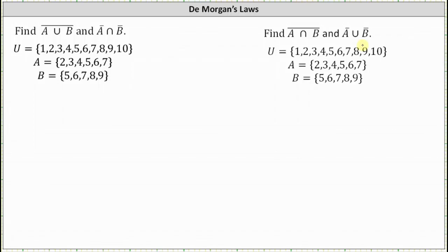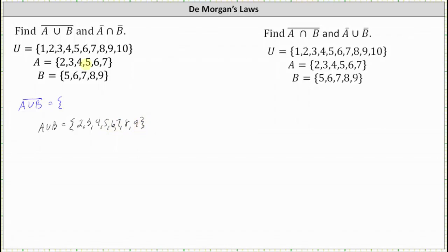Let's begin by determining the complement of the union of A and B. This is the set containing the elements that are not in the union of A and B. Let's first determine A union B. A union B is the set containing the elements that are in A or in B. Analyzing sets A and B, A union B is the set containing the elements {2, 3, 4, 5, 6, 7, 8, 9}.